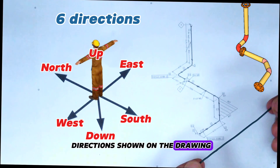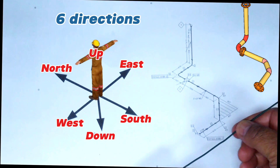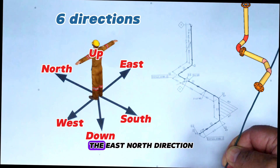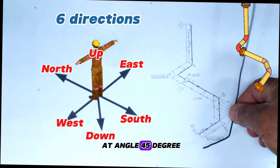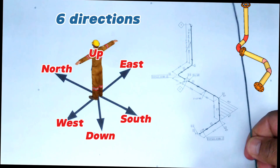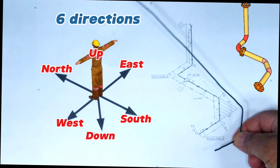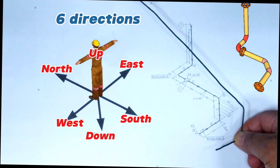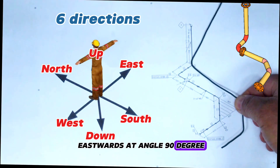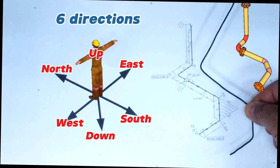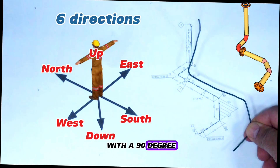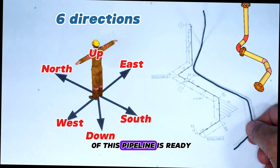We will use the directions shown on the drawing when bending the wire. We hold the wire to the east as shown in the drawing. At this point we bend the wire to the east-north direction at 45 degrees. Then we bend the wire northwards at 45 degrees. At this point we bend the wire to the east-north direction at 90 degrees. At last, we bend the wire upwards at 90 degrees. The wire-bent model of this pipeline is ready.